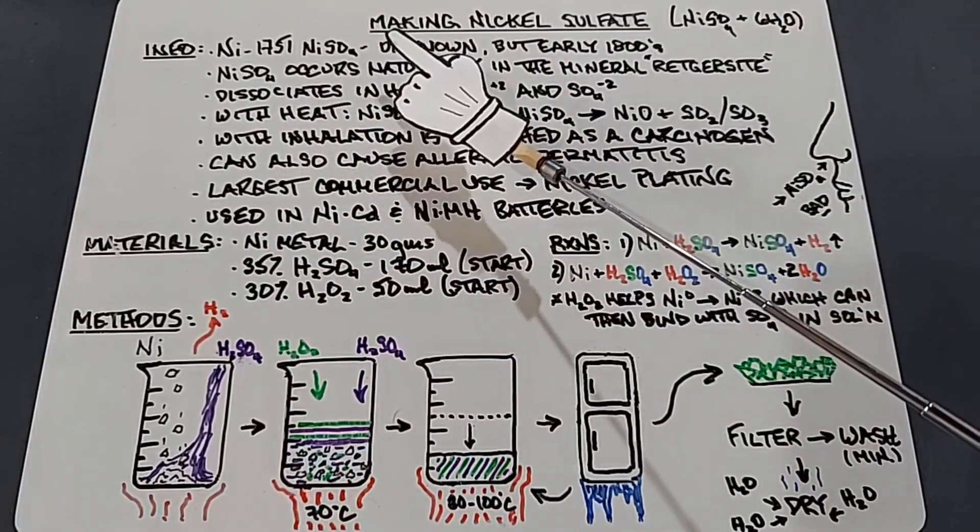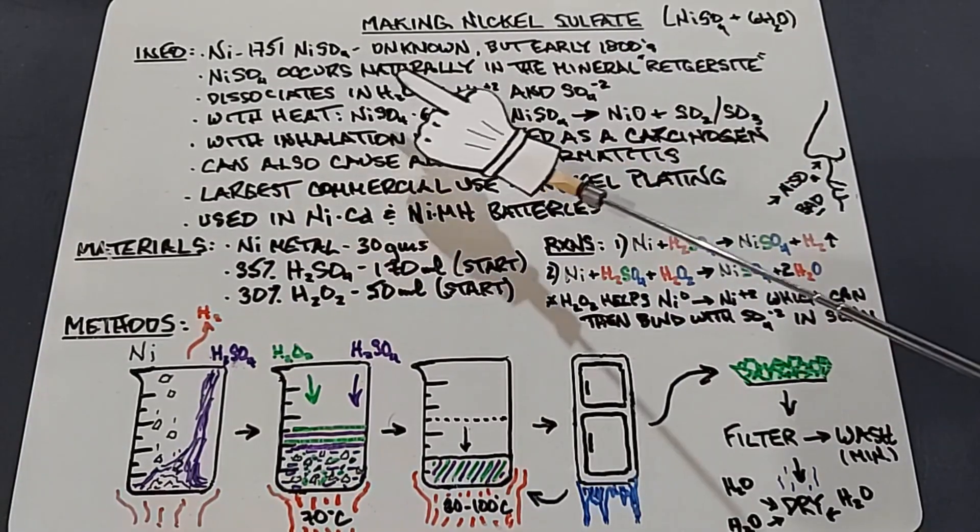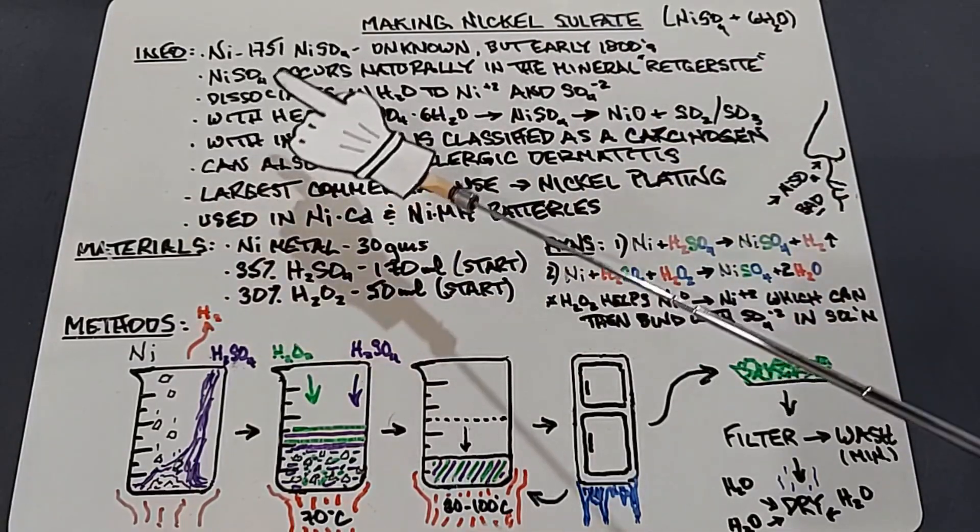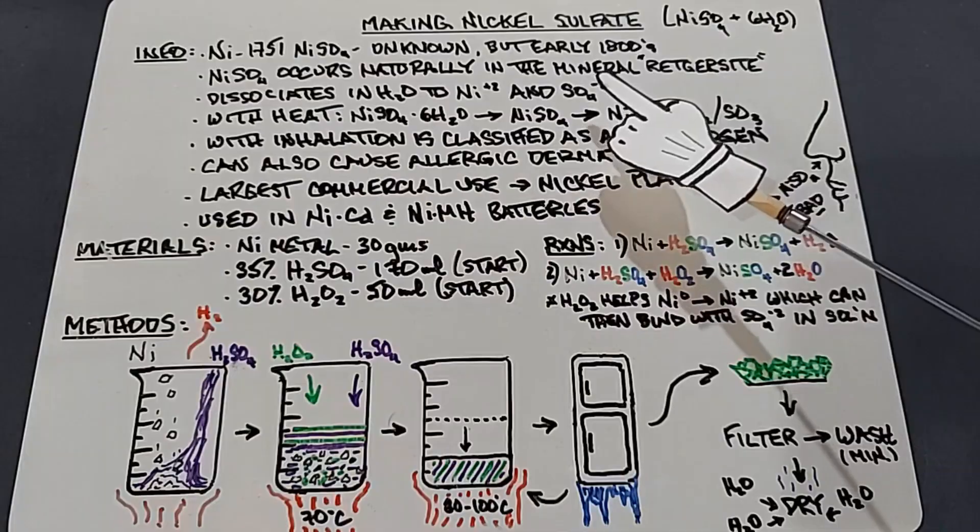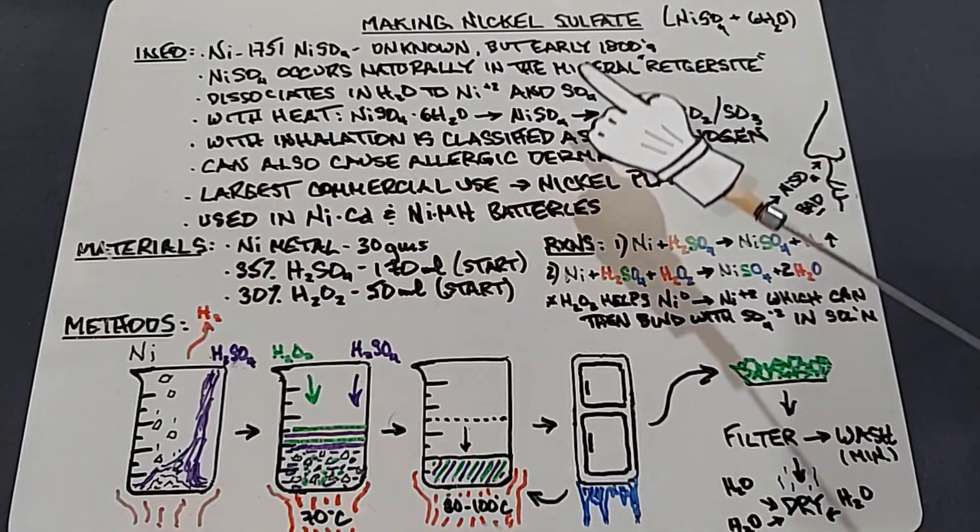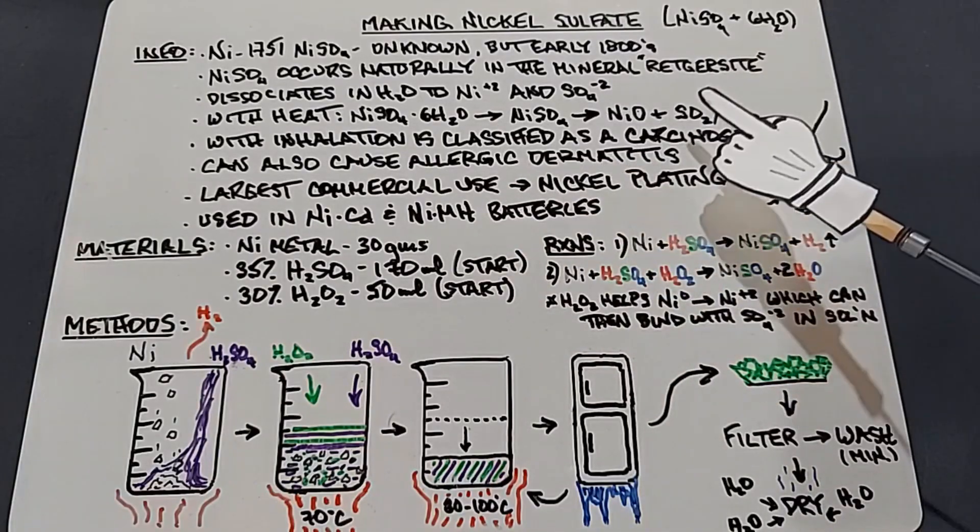Nickel sulfate - nobody knows who discovered it, much like nickel chloride, but it was sometime in the early 1800s. Nickel sulfate does occur naturally in a mineral called retgersite. When you put it in water it dissociates into nickel ions and sulfate ions. When you heat nickel sulfate hexahydrate, the first thing you do is lose the six waters, so you have nickel sulfate. If you continue to heat it you'll get nickel oxide and typically sulfur dioxide, but sometimes sulfur trioxide.